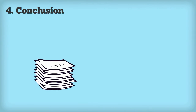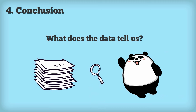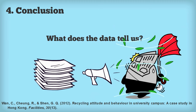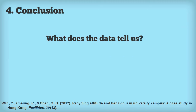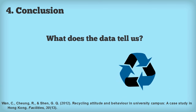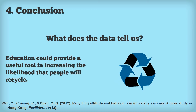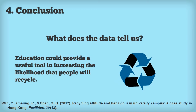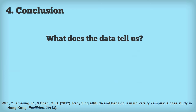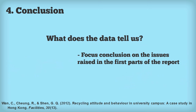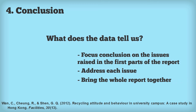The first part we'll look at is the conclusion section. This is where we'll outline everything that the data has told us. For example, our previous example showed that people who know the consequences of recycling are more likely to do it. Therefore, our conclusion could be that education could provide a useful tool in increasing the likelihood that people will recycle. This will also help to focus our conclusions on the issues raised in the first parts of the report, and we can use the conclusion to address each issue and bring the whole report together.